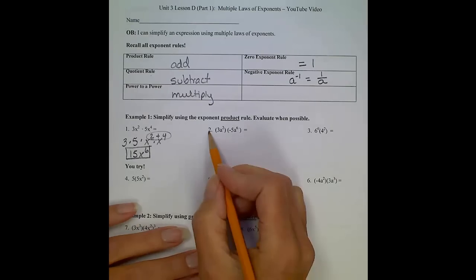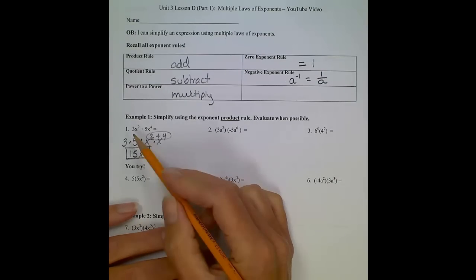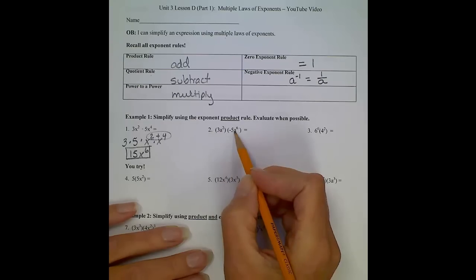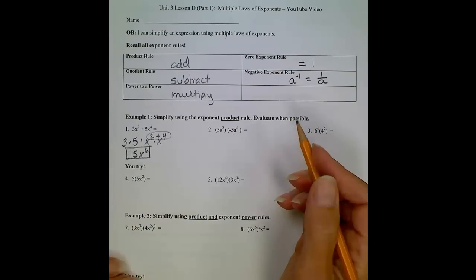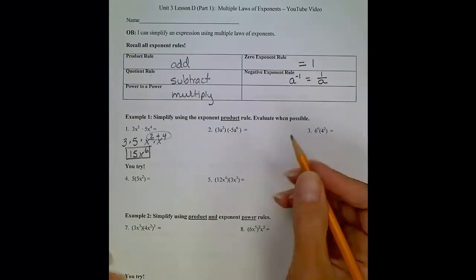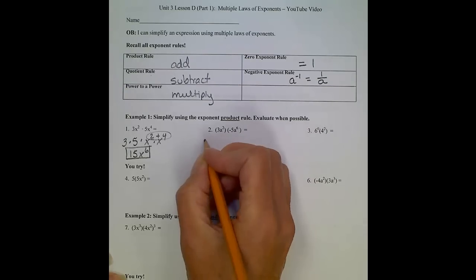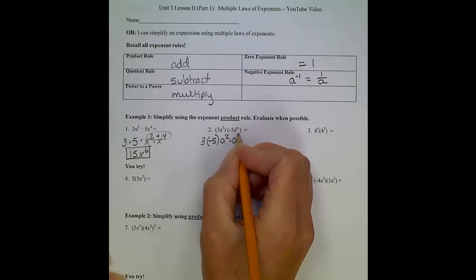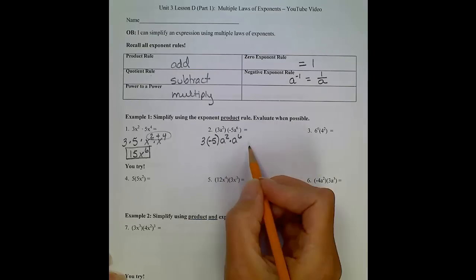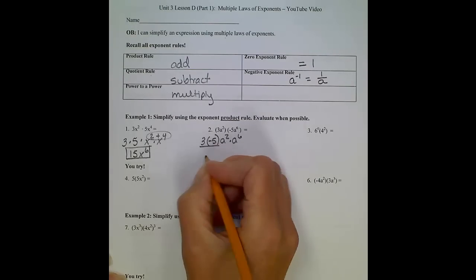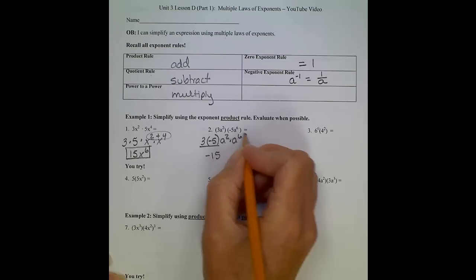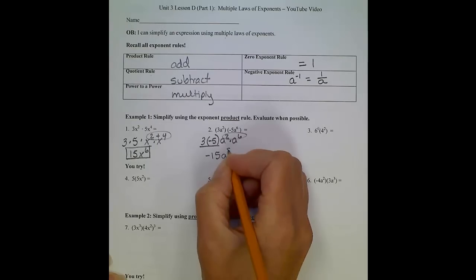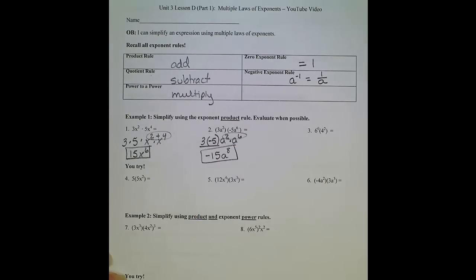Now number 2 looks different, but they're actually asking us to do the same thing. Parentheses imply multiplication, and since I have this negative term in there, I'm going to approach it the same way we approached number 1. I'm going to regroup: put 3 next to negative 5, and put my a squared term next to my a to the 6th term. All these terms are being multiplied together. 3 times negative 5 will give us negative 15, and a to the 2nd times a to the 6th, we're adding those exponents, we're going to get a to the 8th. Final answer: negative 15a to the 8th.